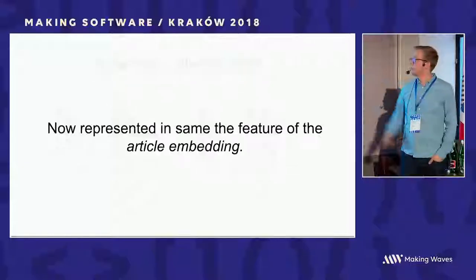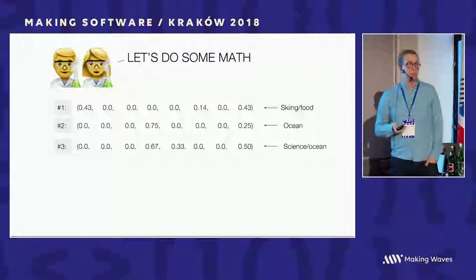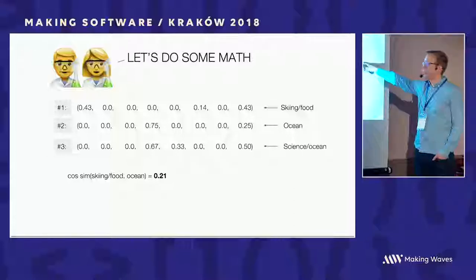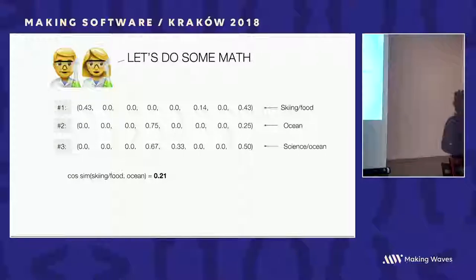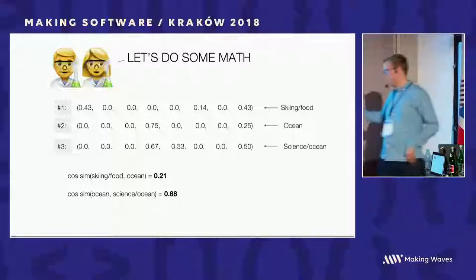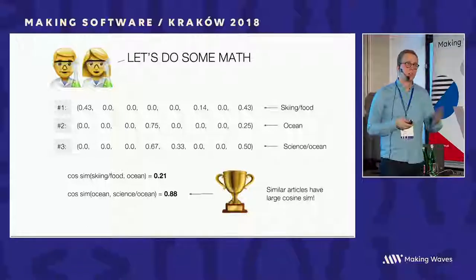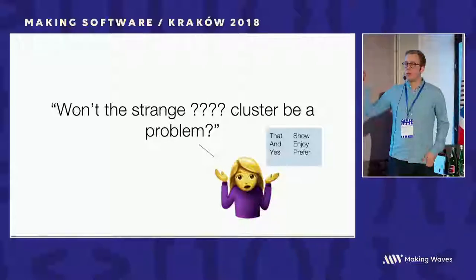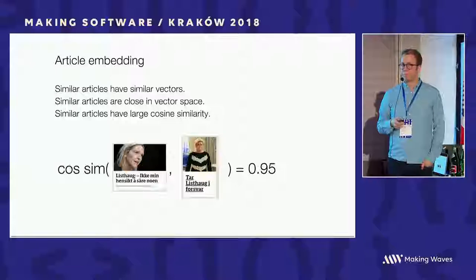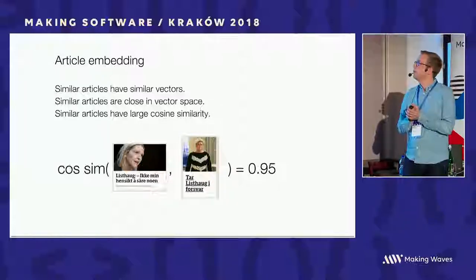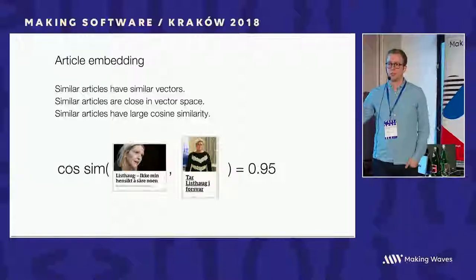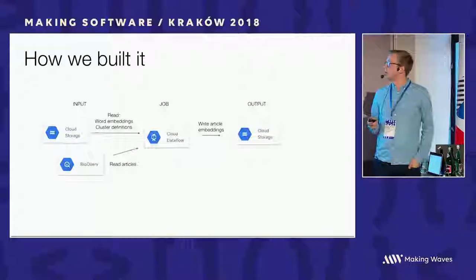Now we can do math on the articles. We can measure cosine similarity between the skiing article and the fishing article and get 0.21 — not that similar. If we check the similarity between the two ocean-related articles, we get a quite high score, meaning similar articles have large cosine similarity. Now we have article embeddings where similar articles have similar vectors, are close in vector space, and have large cosine similarity.